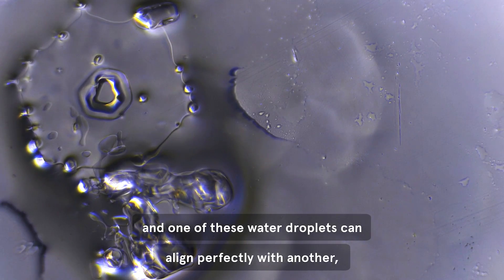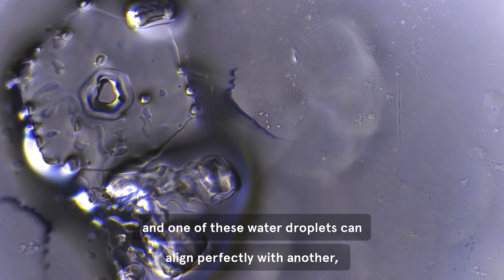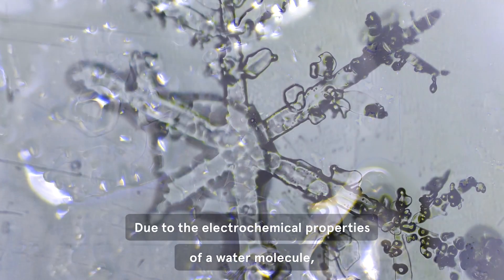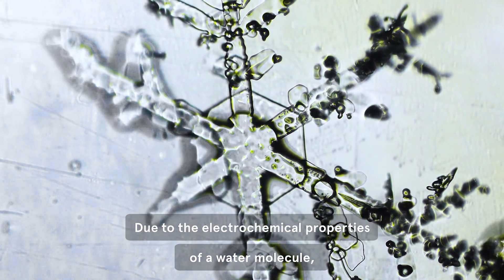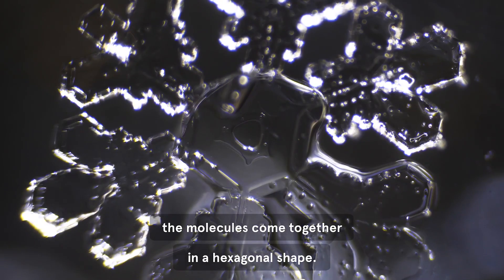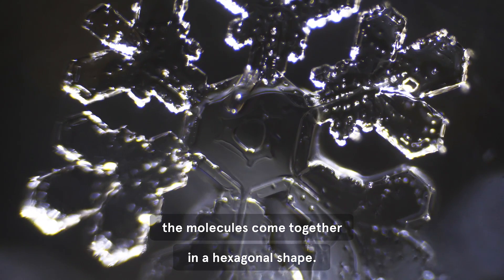And if the humidity is right, and one of these water droplets can align perfectly with another, crystallization occurs. Due to the electrochemical properties of a water molecule, when water freezes, the molecules come together in a hexagonal shape.